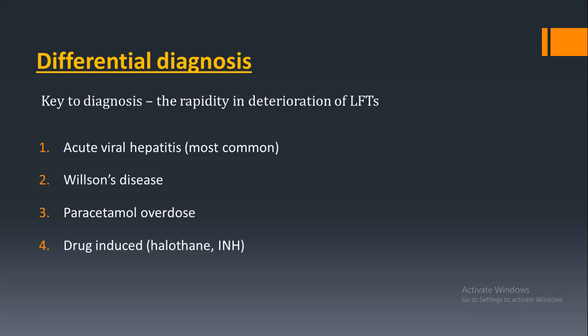The key to diagnosis is rapidity in the duration of liver function test changes. Differential diagnoses include acute viral hepatitis, Wilson's disease, drug-induced hepatitis, and paracetamol overdose — which can produce a clinical presentation hard to distinguish from acute fatty liver of pregnancy and should always be kept in mind.